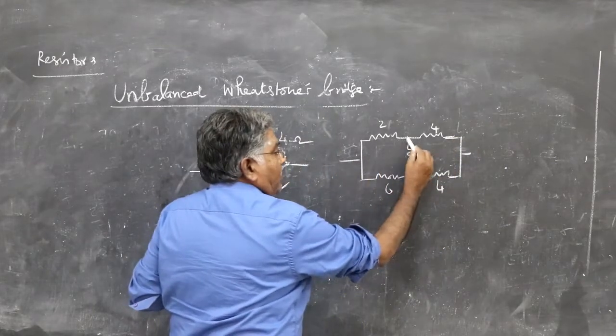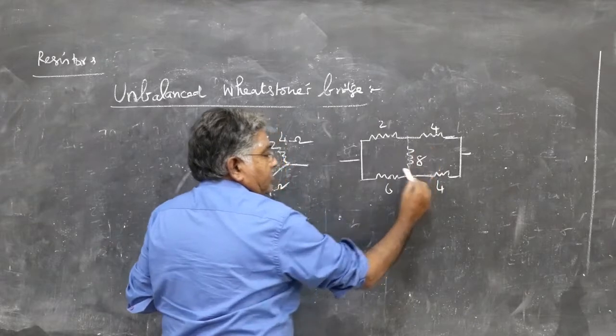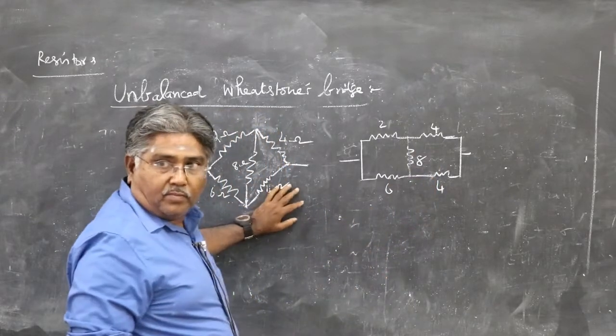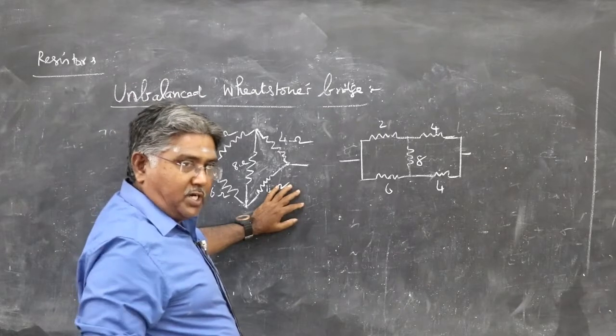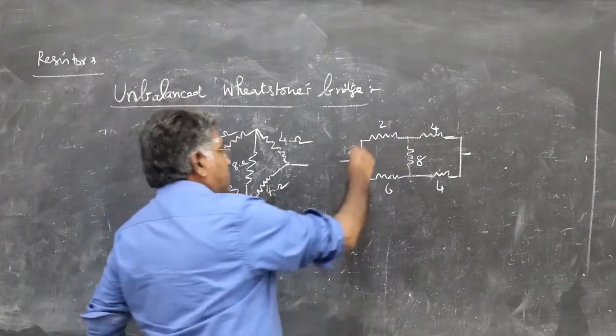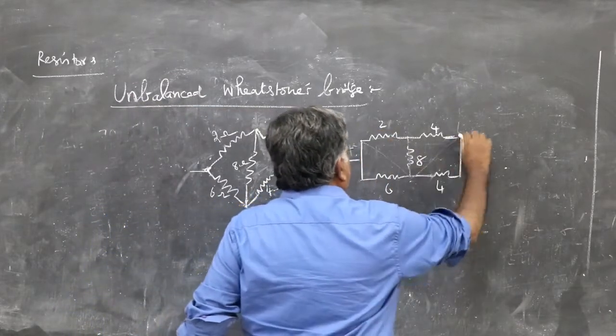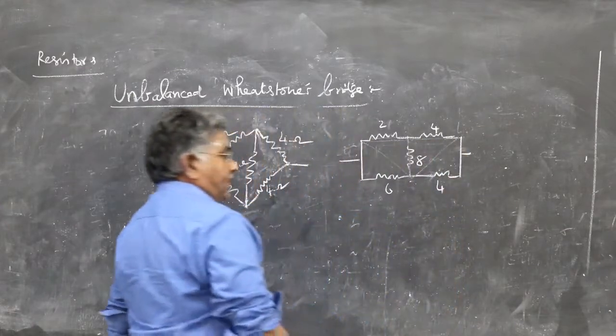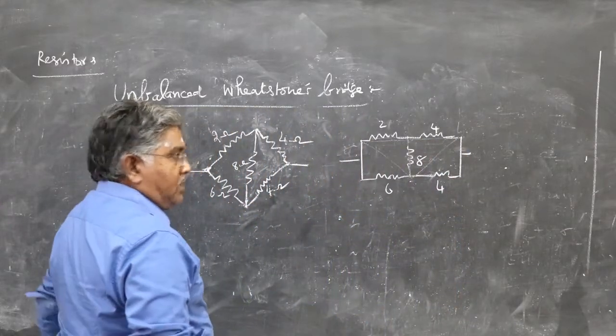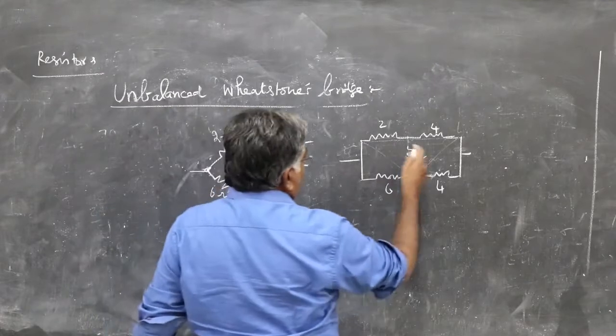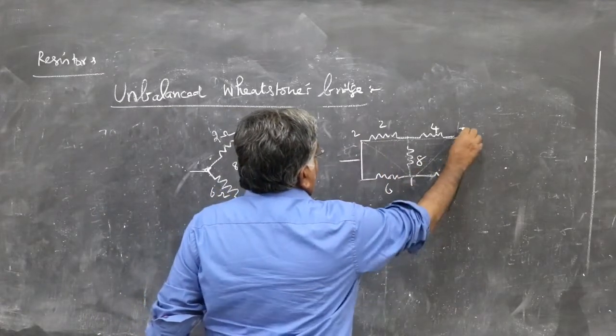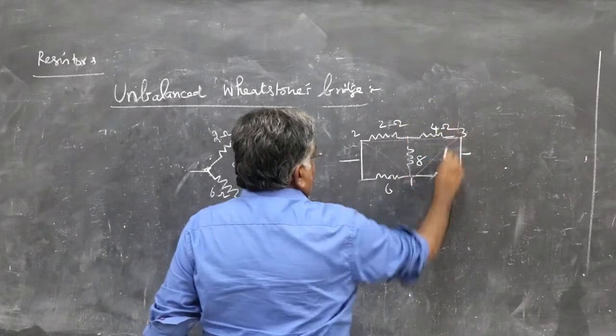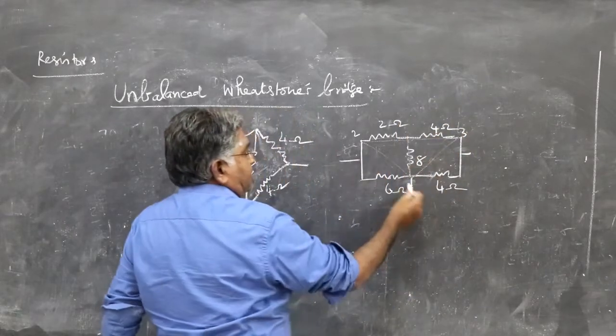Now you can see this is T form, which is nothing but a Y network, star network. You can convert it into a delta form. That means it will come here like this. So you consider the nodes as 1, 2, 3. These are resistors, these are all nodal points.